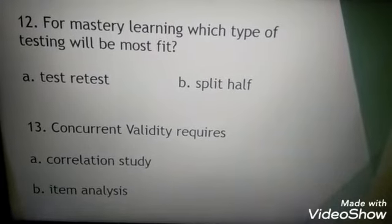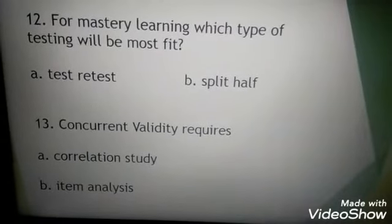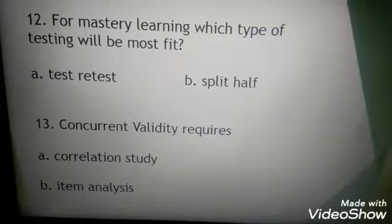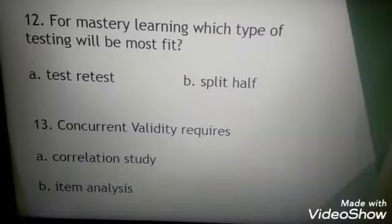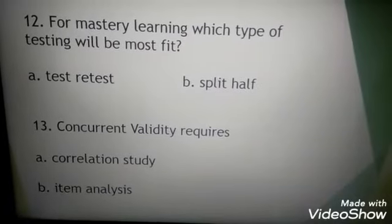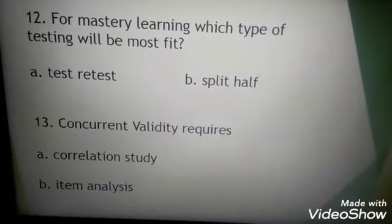Number thirteen: concurrent validity requires, is it A, correlation study, or B, item analysis? The answer is letter A, correlation study.